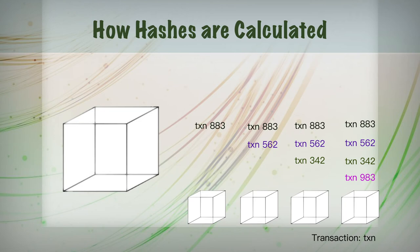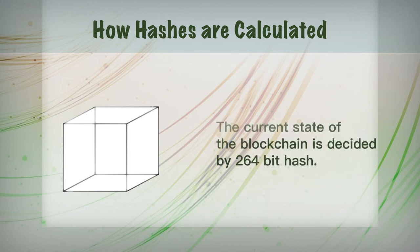You can see tampering by comparing the hashes of all previous blocks and current blocks. The current state of the blockchain is decided by a 264-bit hash that the entire network has to agree on.